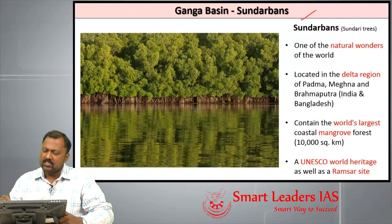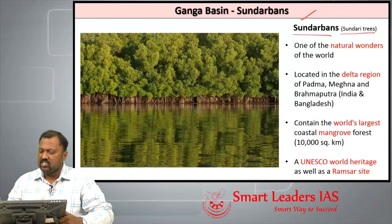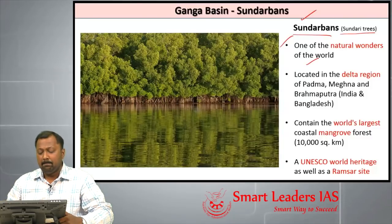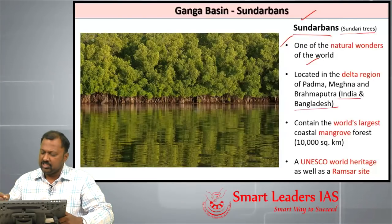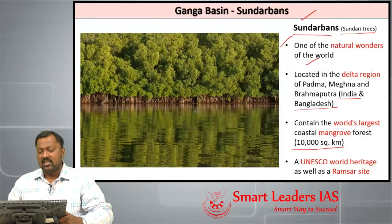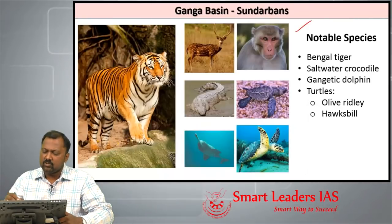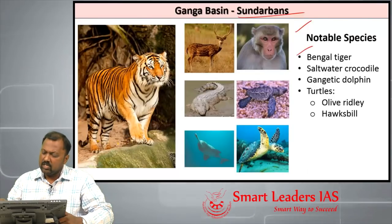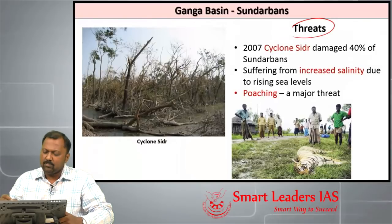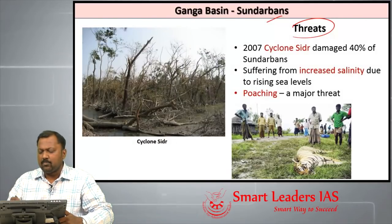Sundarbans delta is one of the world's largest deltas. The name 'Sundarbans' is derived from the Sundari tree. It is one of the natural wonders of the world, located in the delta region of the Padma, Meghna, and Brahmaputra rivers, present in both India and Bangladesh. It contains the world's largest coastal mangrove forest, extending to approximately 10,000 square kilometers. It is both a UNESCO World Heritage Site and a Ramsar site. Notable species include the Bengal tiger, saltwater crocodile, Gangetic dolphin, Olive Ridley turtle, and hawksbill turtle.